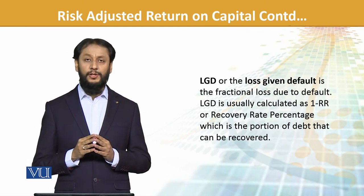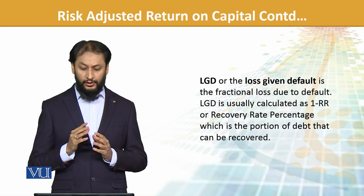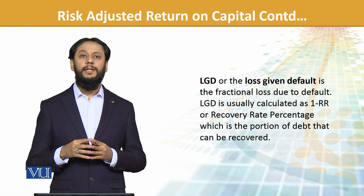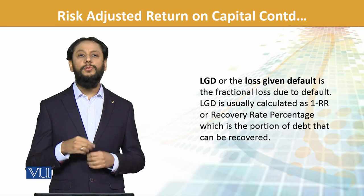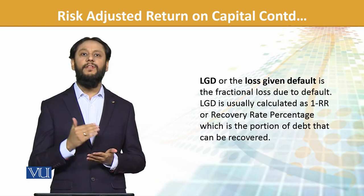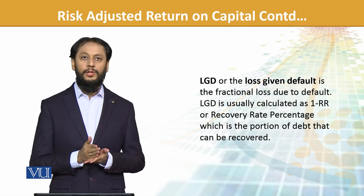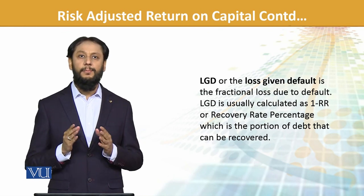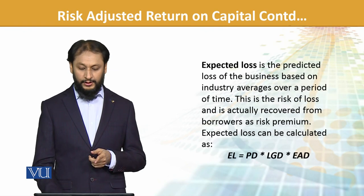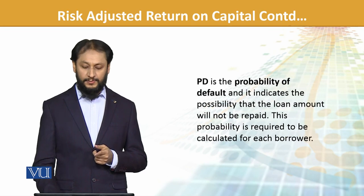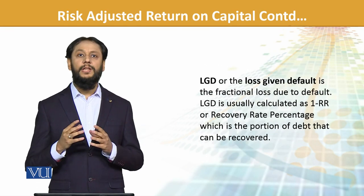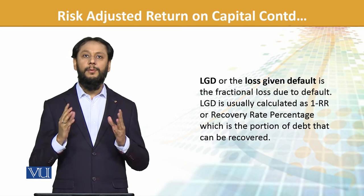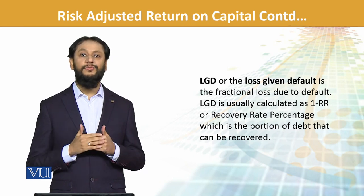LGD, or Loss Given Default, is the fractional loss due to default. It is normally one minus the recovery percentage. Default does not mean you lose everything — if you gave a loan of 100, sometimes 60% comes back, sometimes 50%. So the actual loss impact is one minus the recovery rate. When all three elements — EAD, PD, and LGD — are combined, that gives us the expected loss calculation. This helps us gauge the performance of any manager, and we can calculate the return based on risk factors.